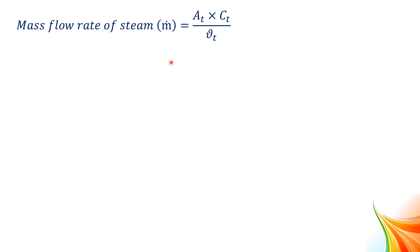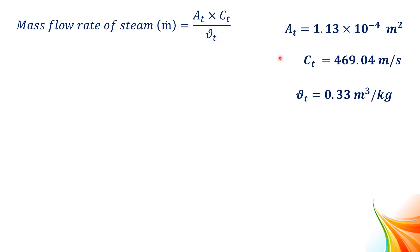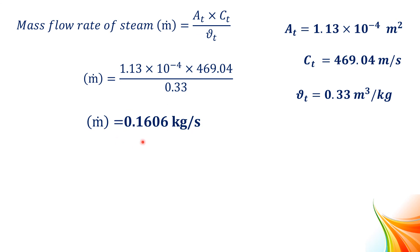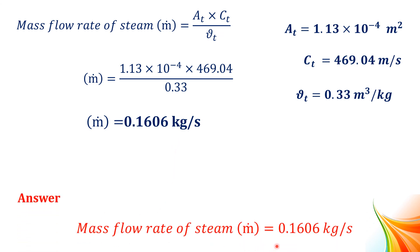Substituting these values into the mass flow rate equation M-dot = AT × CT / VT, with AT = 1.13 × 10⁻⁴ m², CT = 469.04 m/s, and VT = 0.33 m³/kg, we get the mass flow rate M-dot = 0.1606 kg/s. So the mass flow rate of steam is 0.1606 kilogram per second.